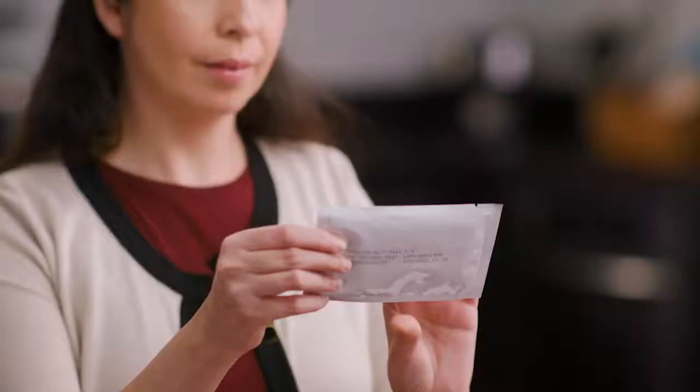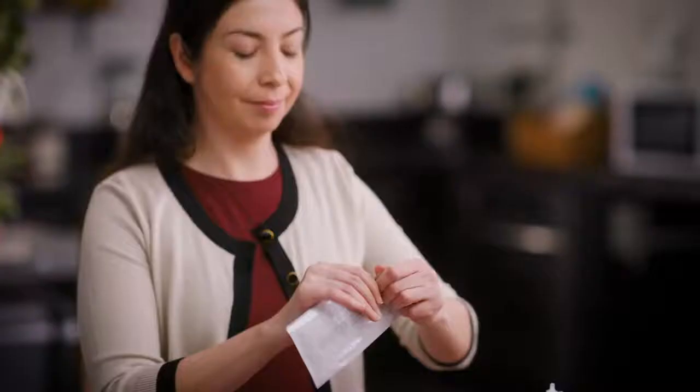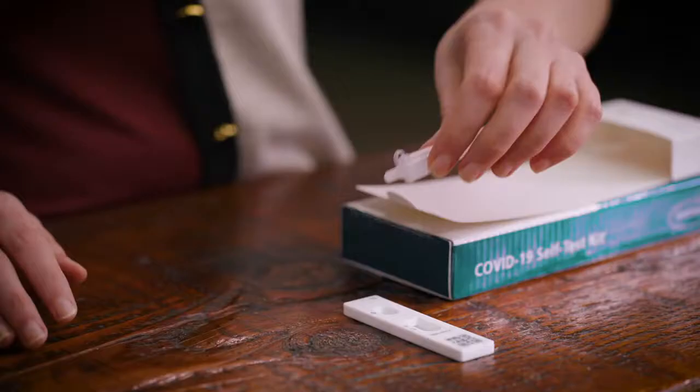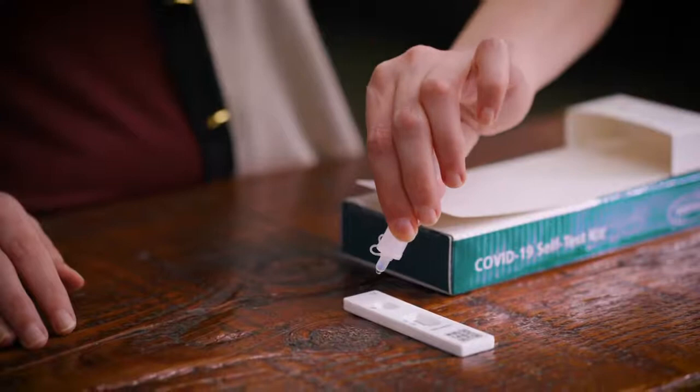Install the nozzle cap onto the extraction tube by pushing it in. Use the test immediately after removing it from its pouch, being careful not to touch the result field. Place two drops into the sample well of the test cartridge. Make sure that drops are delivered into the sample well and not the result field.